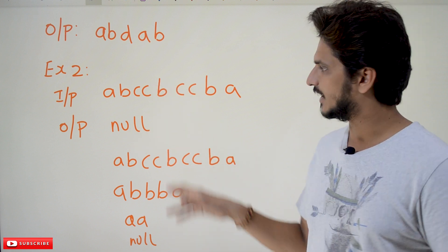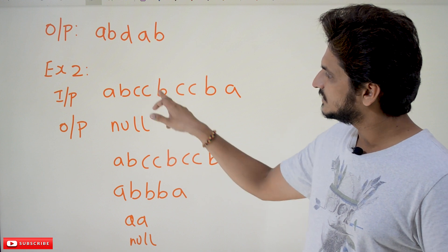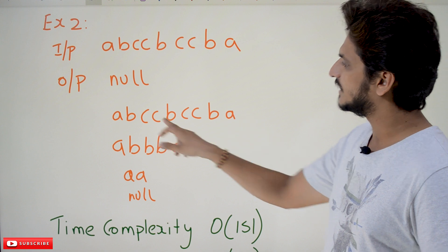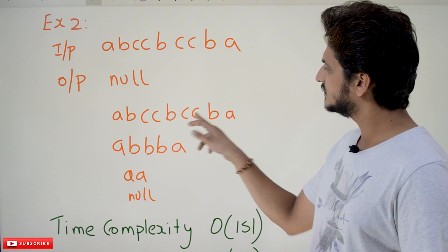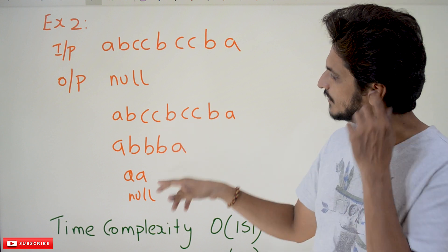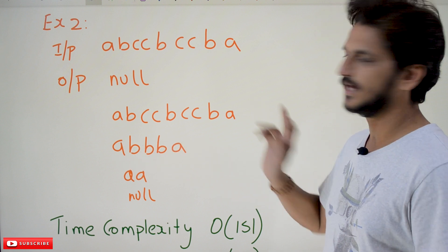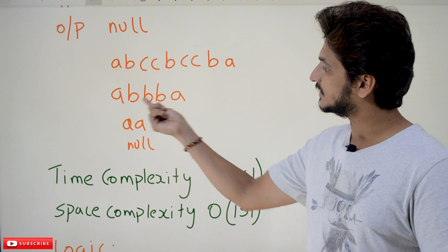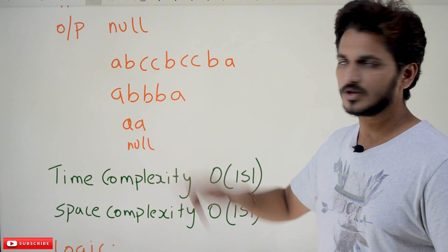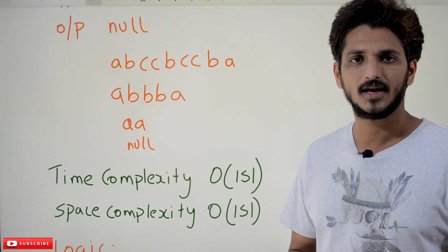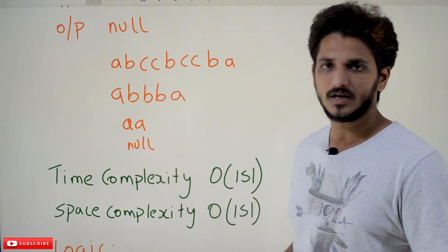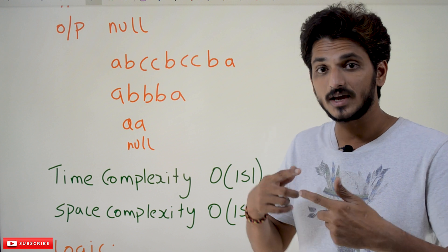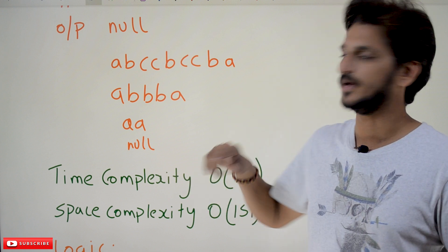Null means nothing. So, adjacent means cc, abccbccba. If you remove cc and cc, what's the remaining? abbbba. Again, recursively remove the adjacent duplicates. bbb, remove it. What you are going to get? aaaa, remove it. What's the value you are going to get? Null value. So you have to do it recursively remove the adjacent duplicates.